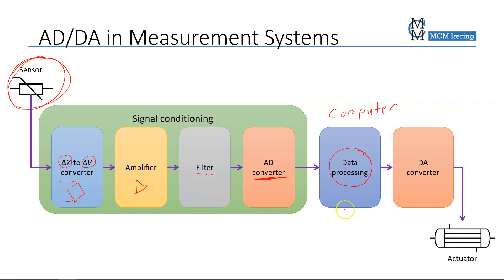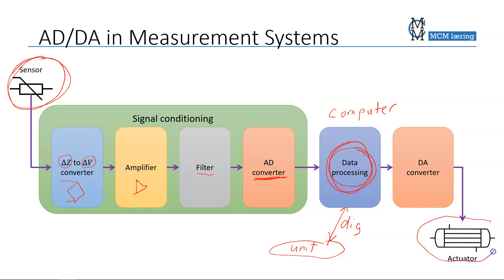This data processing unit is basically a computer, and computers use digital signals. Also, if this data processing unit communicates with another unit, that communication is in most cases digital. But when we want to use the processed data in some kind of actuator — something that has an influence on the process itself — we often need to convert back to an analog signal via a DA converter. The actuator here could be a heat exchanger, a motor, a robotic arm, or whatever.